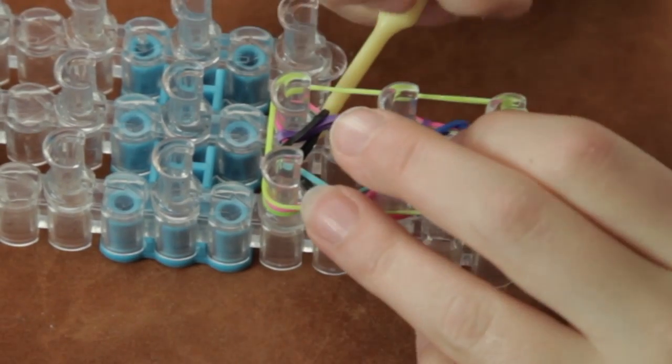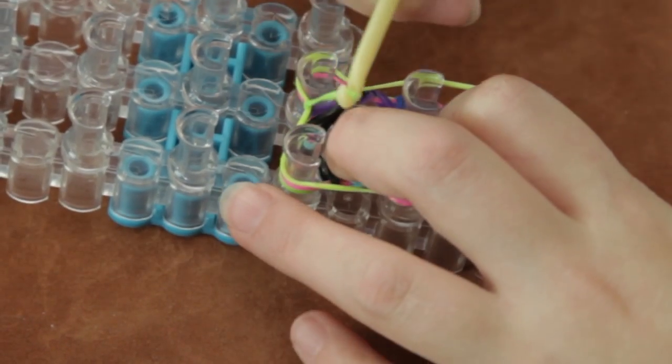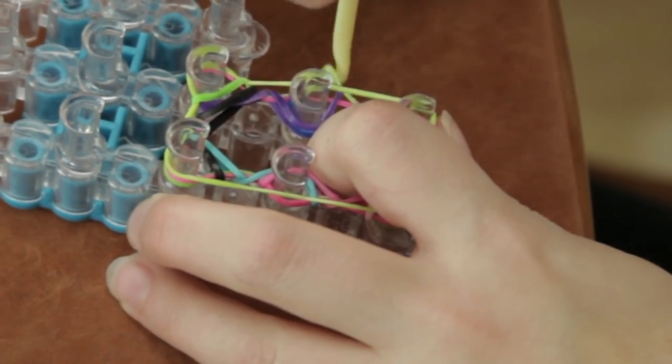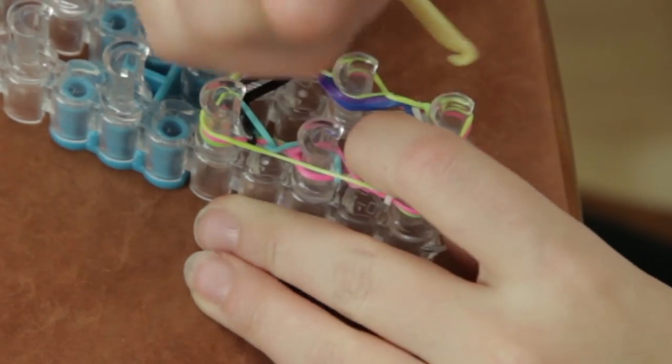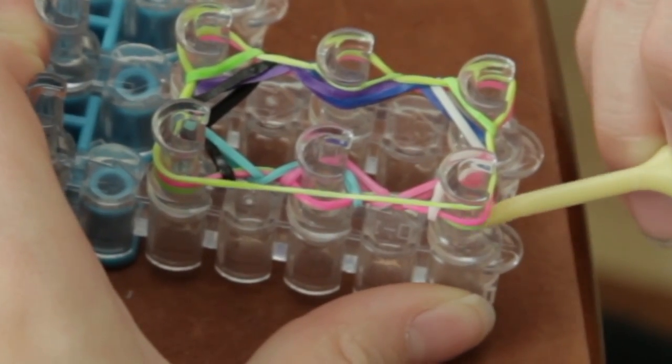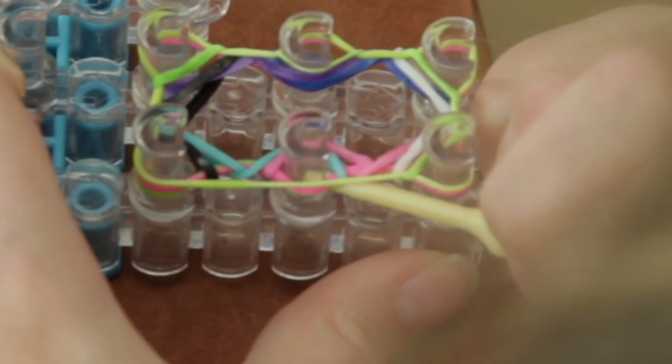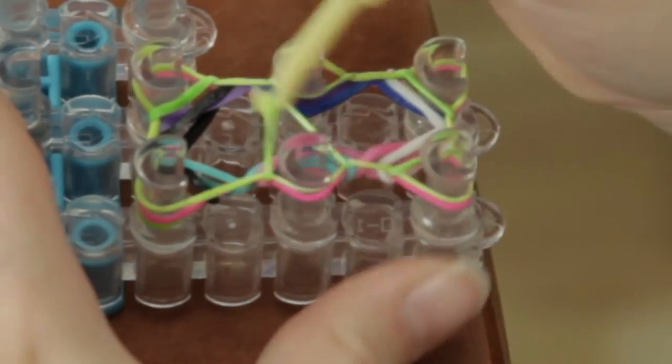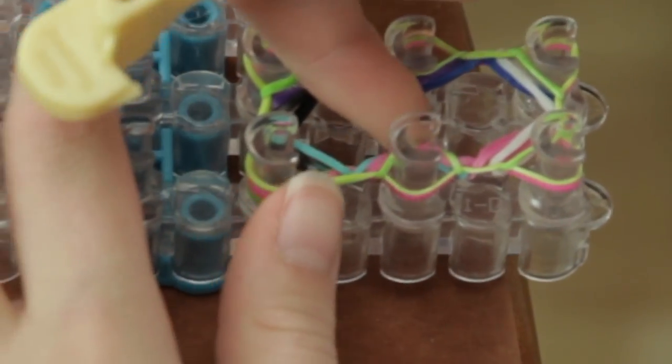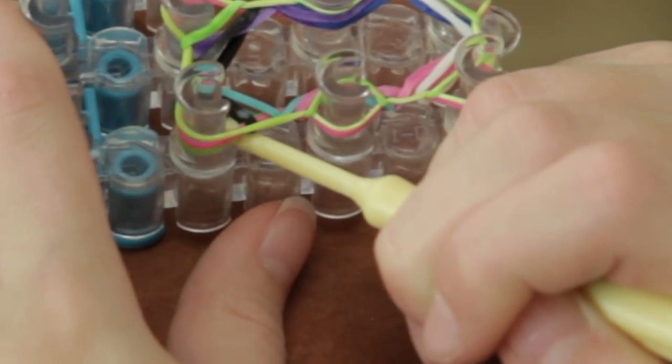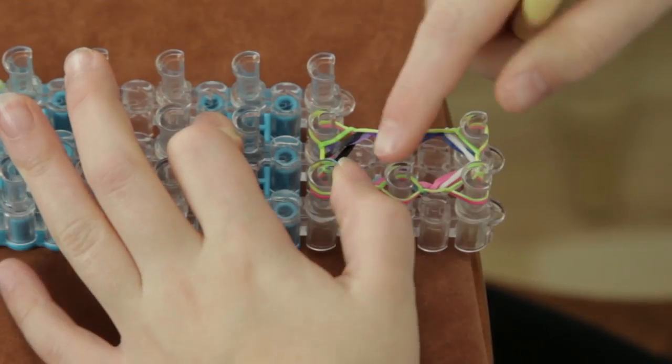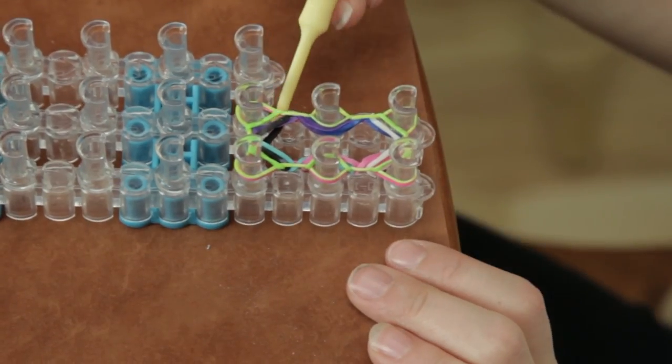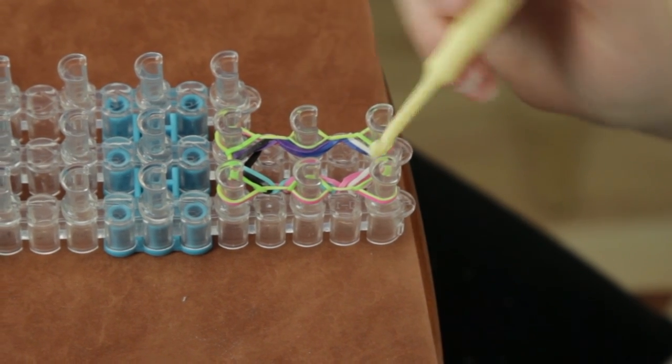And this time you do not loop up two. You only loop up one, the green. You're only lifting up one, the one rubber band which is the green on the bottom. Sometimes they're a little tough to get. Some of them are toughies.